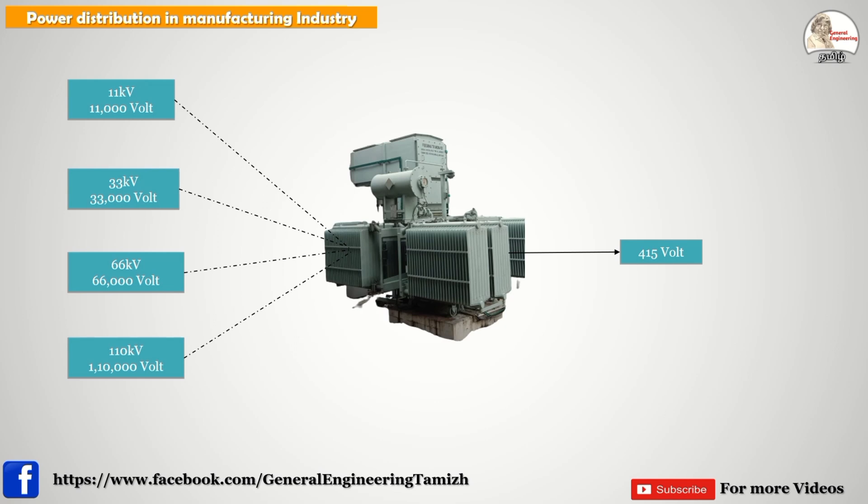Once we choose the high voltage, we have to convert it to 415 volts. Why? Because 95% of equipment in our industry has a voltage rating of 415 volts. So for connecting the electrical supply to all the equipments, we need 415 volts. How to distribute that 415 voltage across the plant — that we will see step by step.